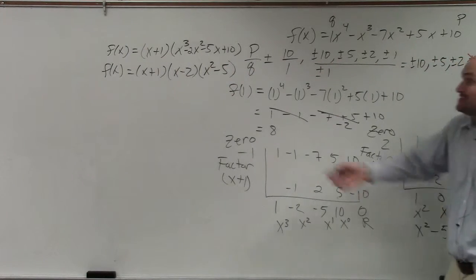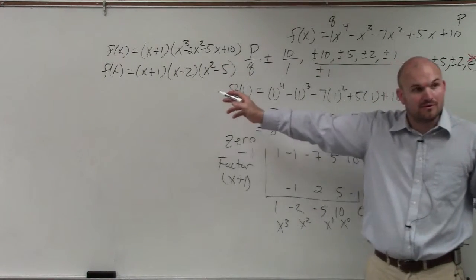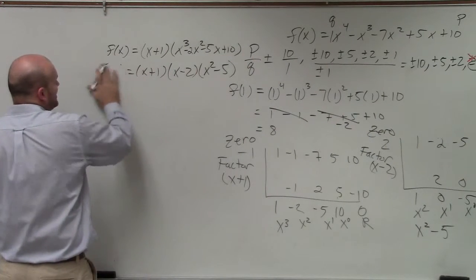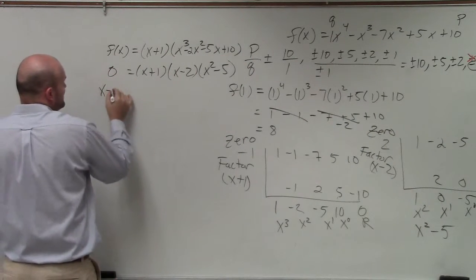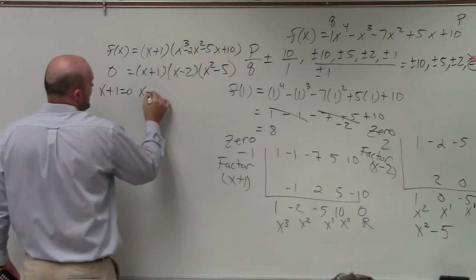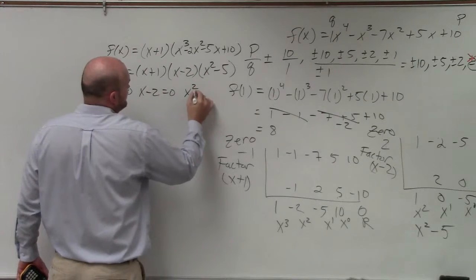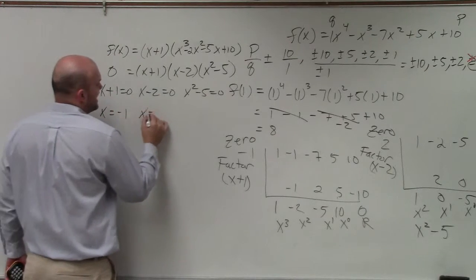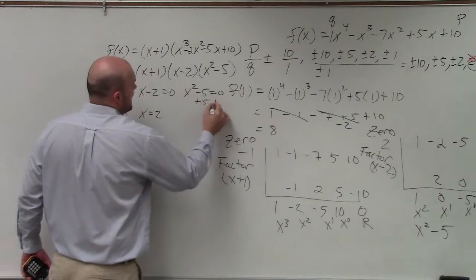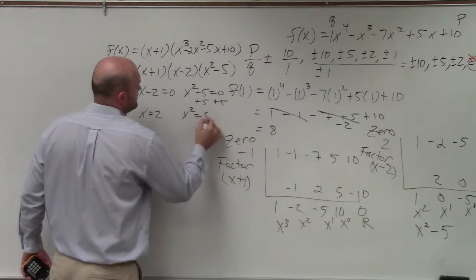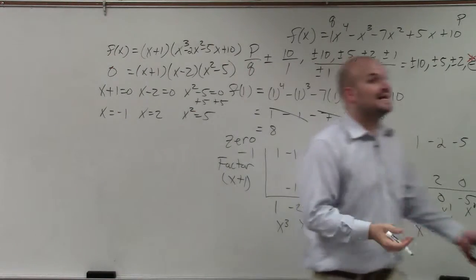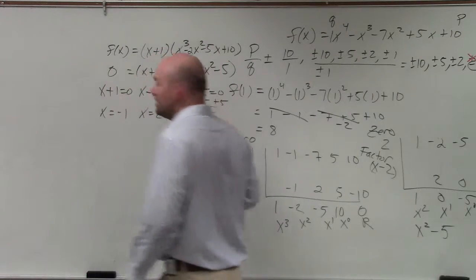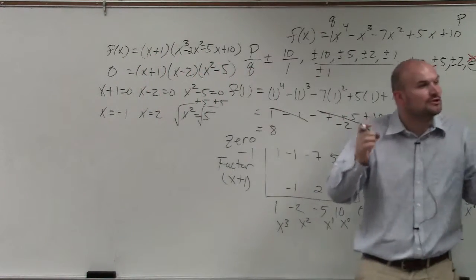Now can I solve each of these for zero? Yes. So now I do the zero product property. I replace this with 0, and I say x plus 1 equals 0, x minus 2 equals 0, and x squared minus 5 equals 0. Therefore, x equals negative 1, x equals 2. Here I have to add 5 to both sides. x squared equals positive 5. Then, to solve this, I have to square root. And please remember the most important thing. When you introduce the square root, you have to include the plus or minus.